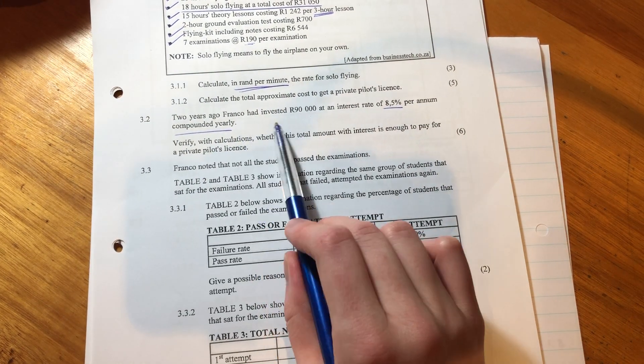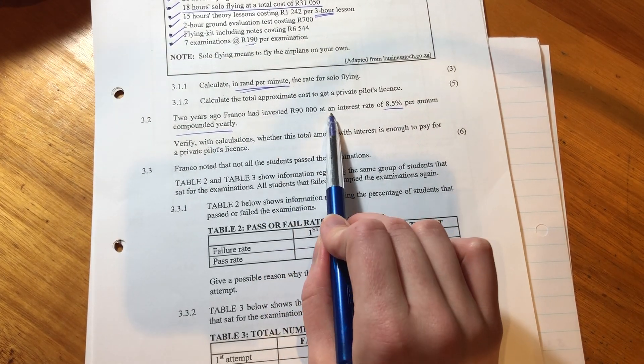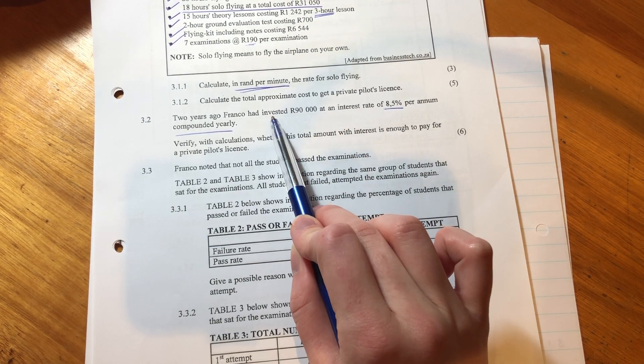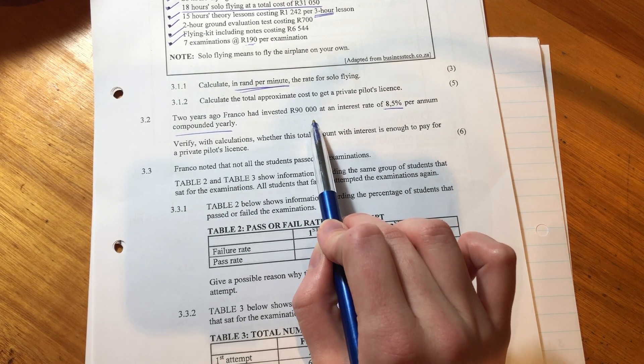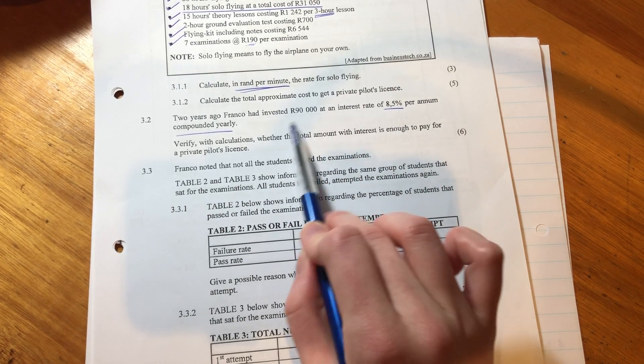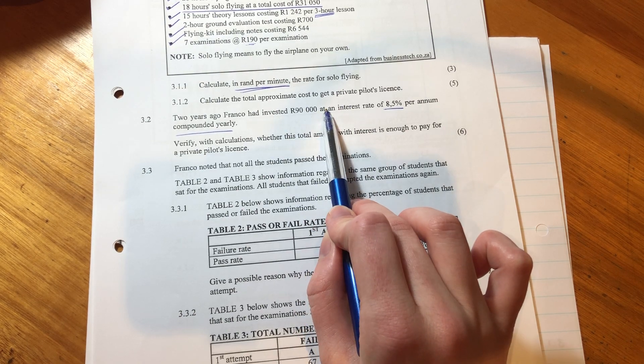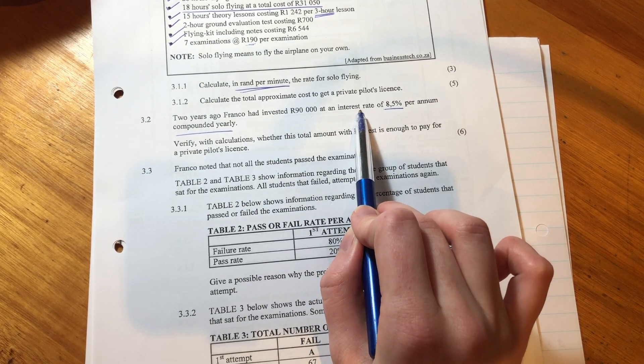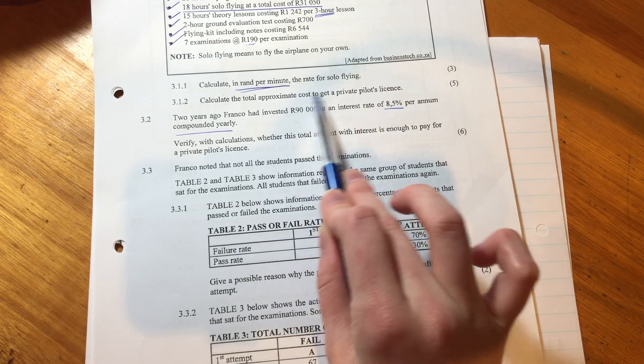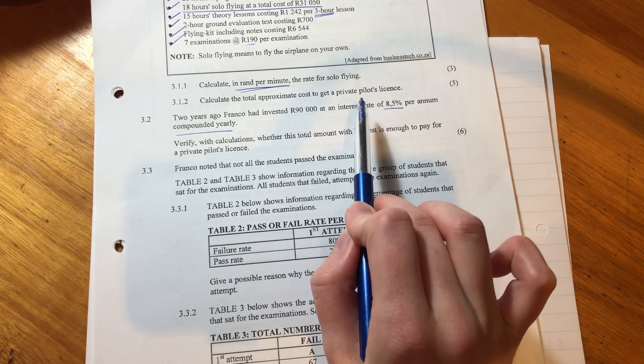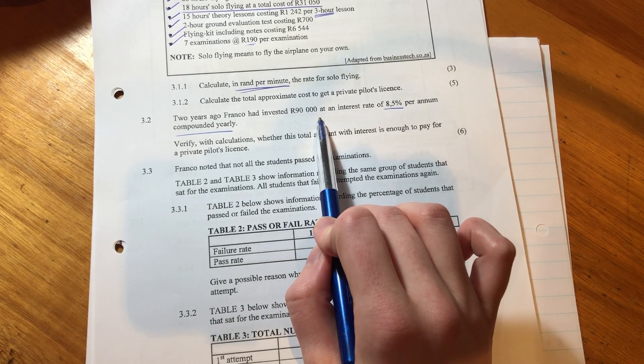So just a point here around interest. Remember, the reason we earn interest when we give money to a bank or when we invest it is because we're giving someone else the right to use our money, and we can't use that money. But to repay us for using the money, they have to pay us interest. That's the whole concept of interest, really important. So it's great when you're the one who's earning interest, not so nice when you're the one paying interest.